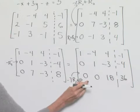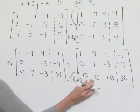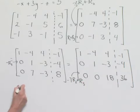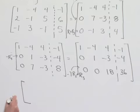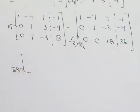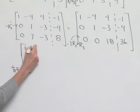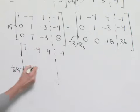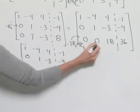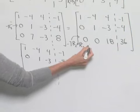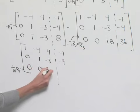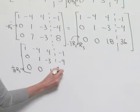Now we have our row-reduced format. In our last row, we divide everything by 18 — that is, we take one-eighteenth times row 3. Our first two rows stay as 1, negative 4, 4, negative 1 and 0, 1, negative 3, negative 4. For row 3: 0 divided by 18 is 0; 0 divided by 18 is 0; 18 divided by 18 is 1; and 36 divided by 18 is 2.